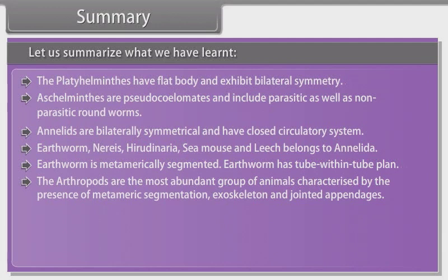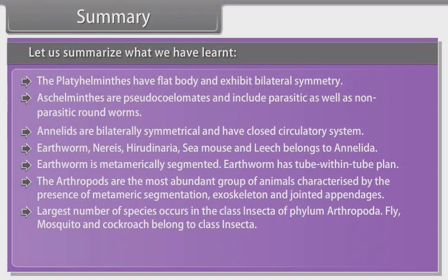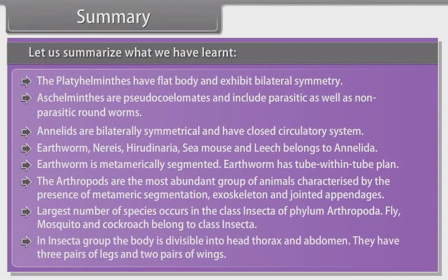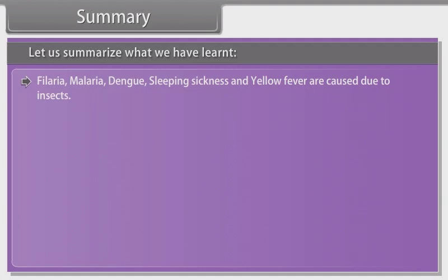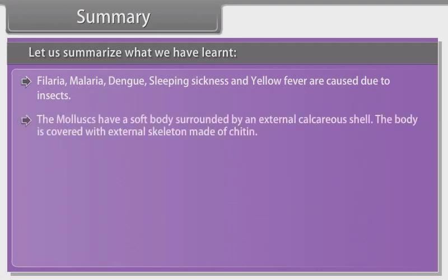The arthropods are the most abundant group of animals, characterized by metameric segmentation, exoskeleton and jointed appendages. The largest number of species occurs in the class Insecta of Phylum Arthropoda. Fly, mosquito and cockroach belong to class Insecta. In the Insecta group, the body is divisible into head, thorax and abdomen, with three pairs of legs and two pairs of wings. Filariasis, malaria, dengue, sleeping sickness and yellow fever are caused by insects.